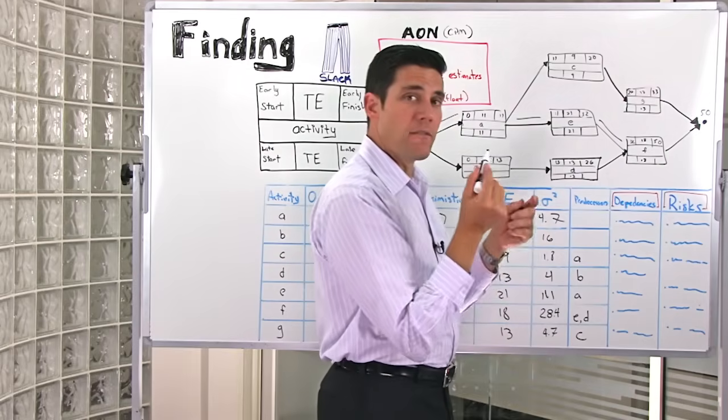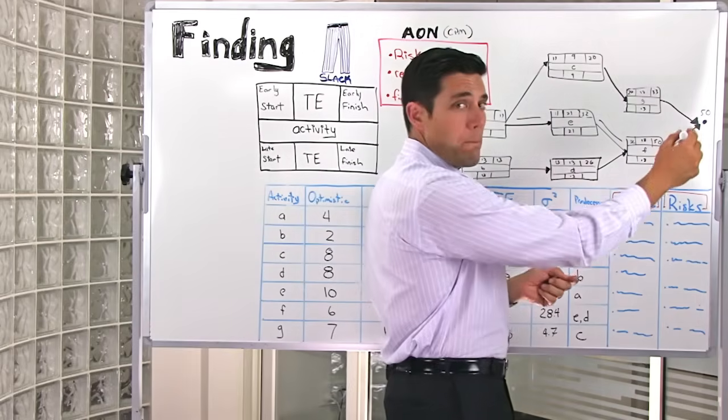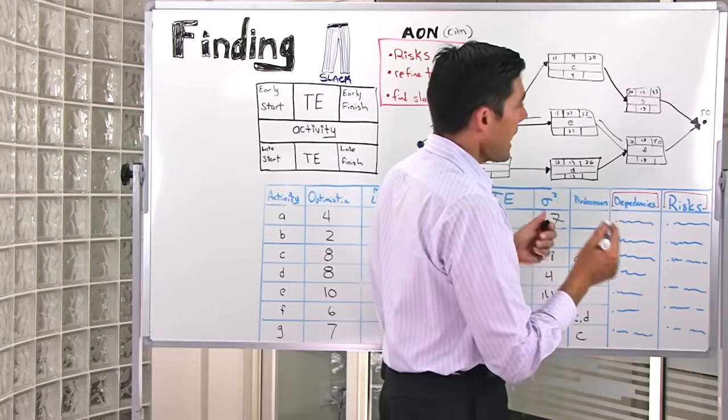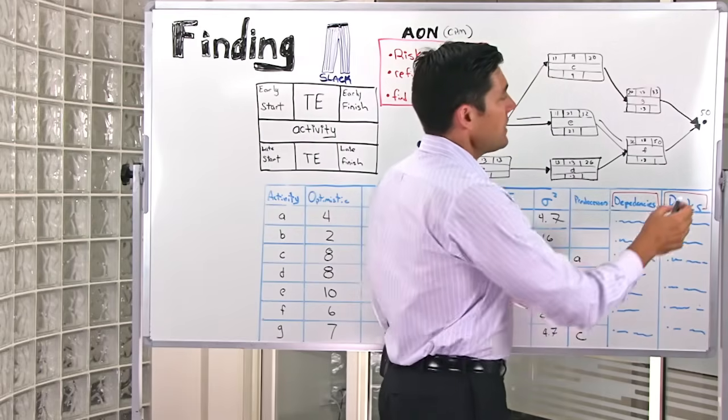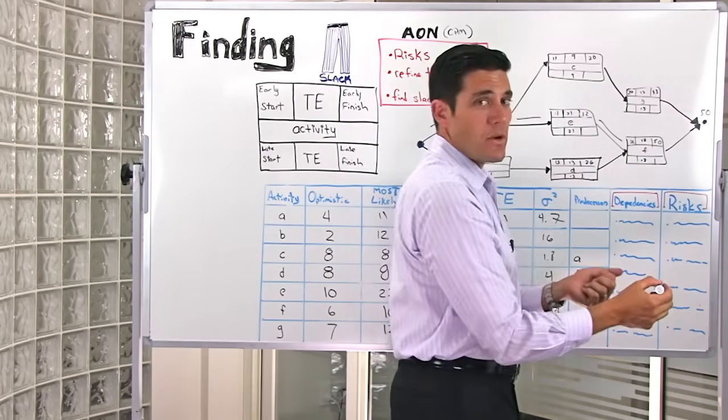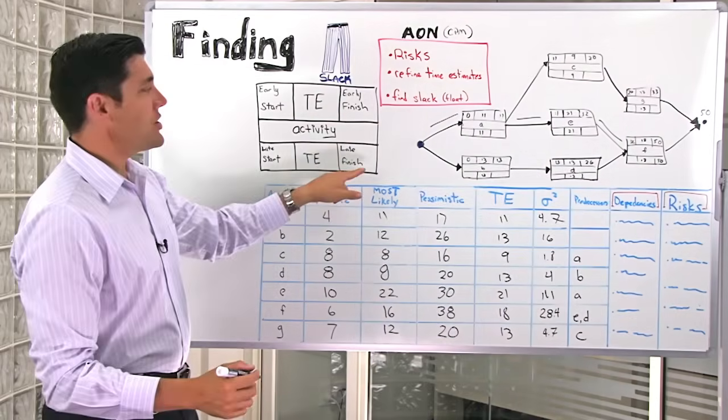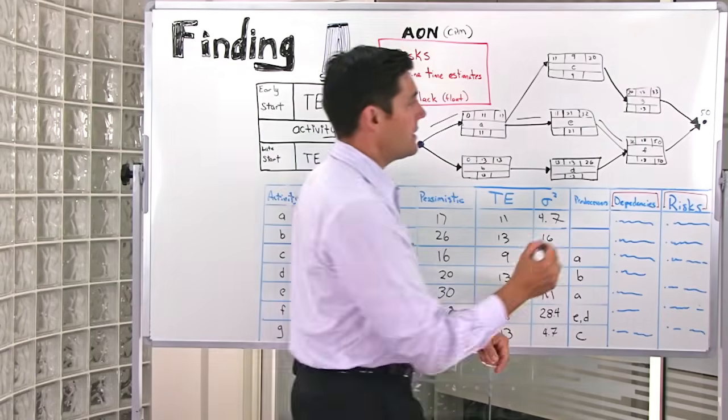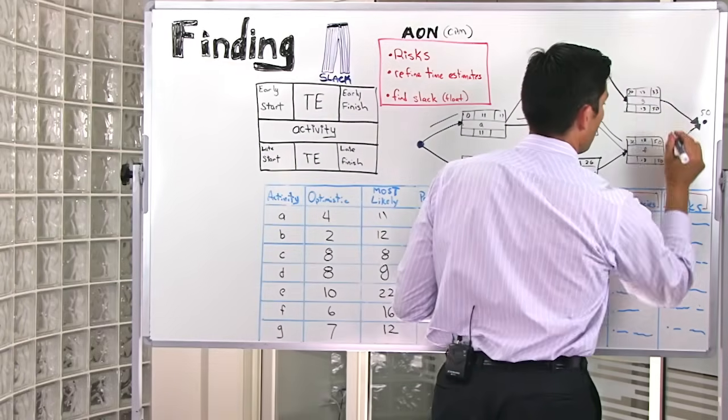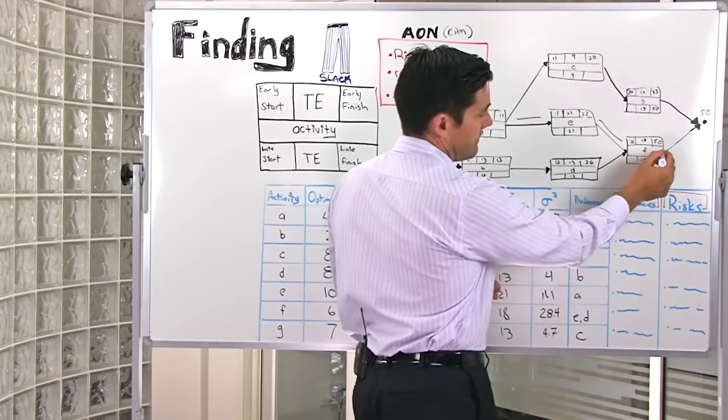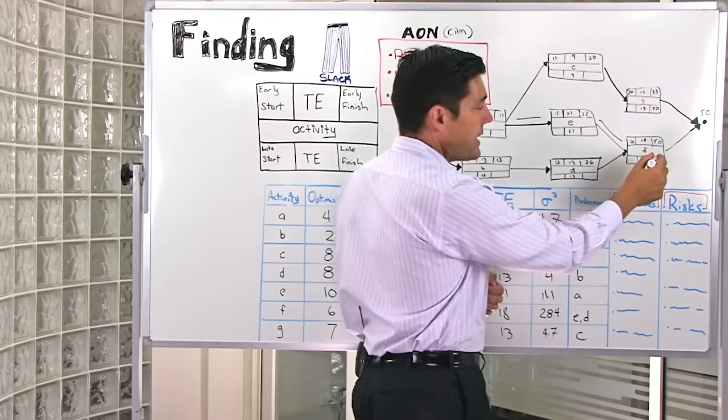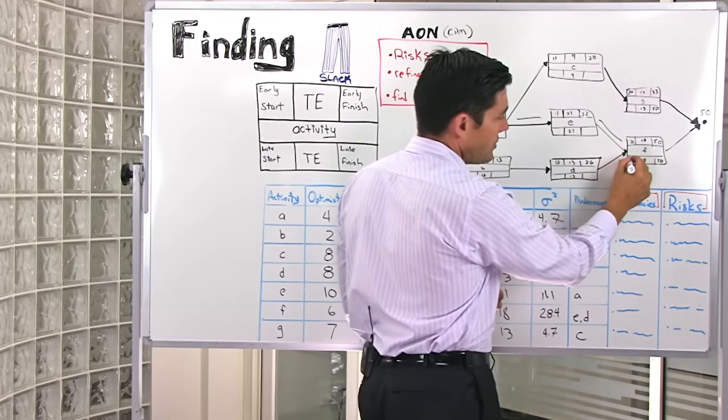Let's go back and calculate the slack of the schedule by going backwards through the network. How do we do that? Well, quite simply, the earliest time that we can actually finish the project is in 50 days. So we put a little 50 in the late finish for each of those two nodes at the end. Then, since this is the same here, 50 days early finish, 18 days to finish.